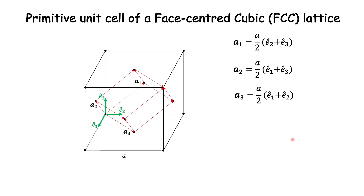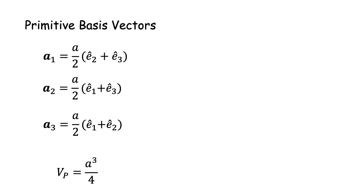Also, if we complete the unit cell and determine its volume, we find that this primitive unit cell has a volume which is just one fourth of the volume of the conventional unit cell. So the primitive unit cell volume Vp = a³/4. These are the ingredients required for the construction of the reciprocal lattice vectors — the primitive basis vectors and the volume of the unit cell.